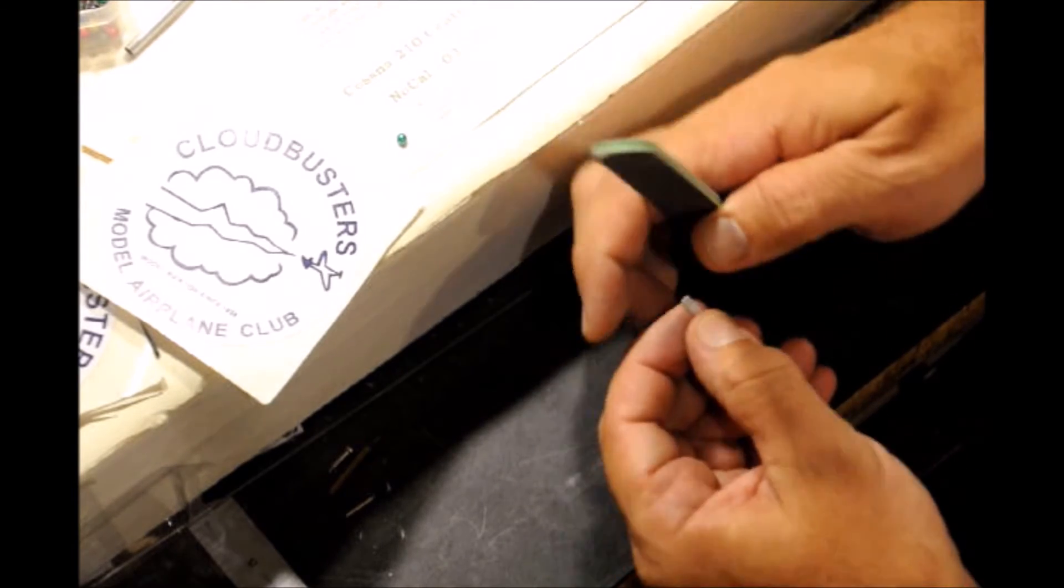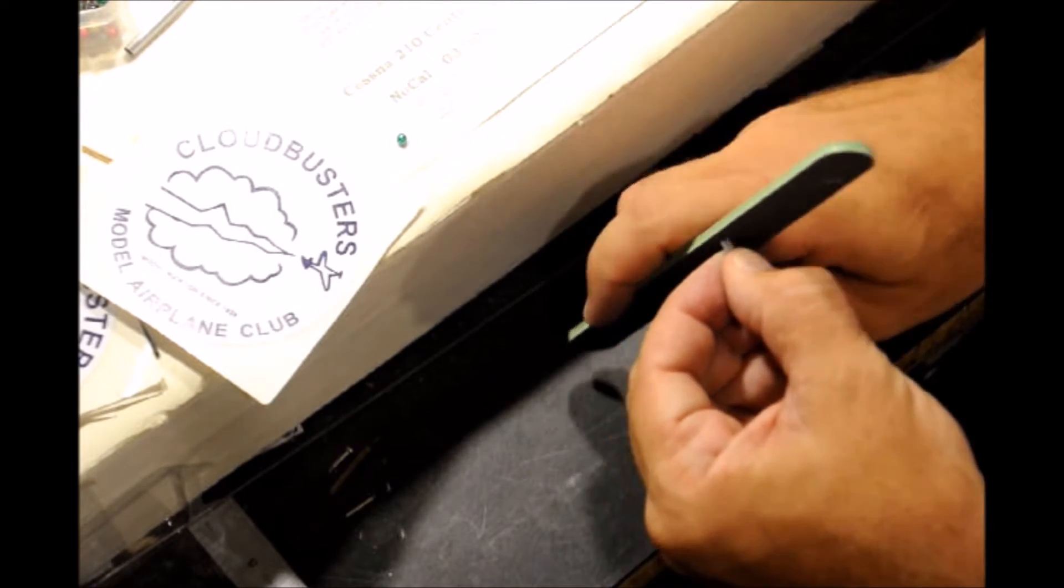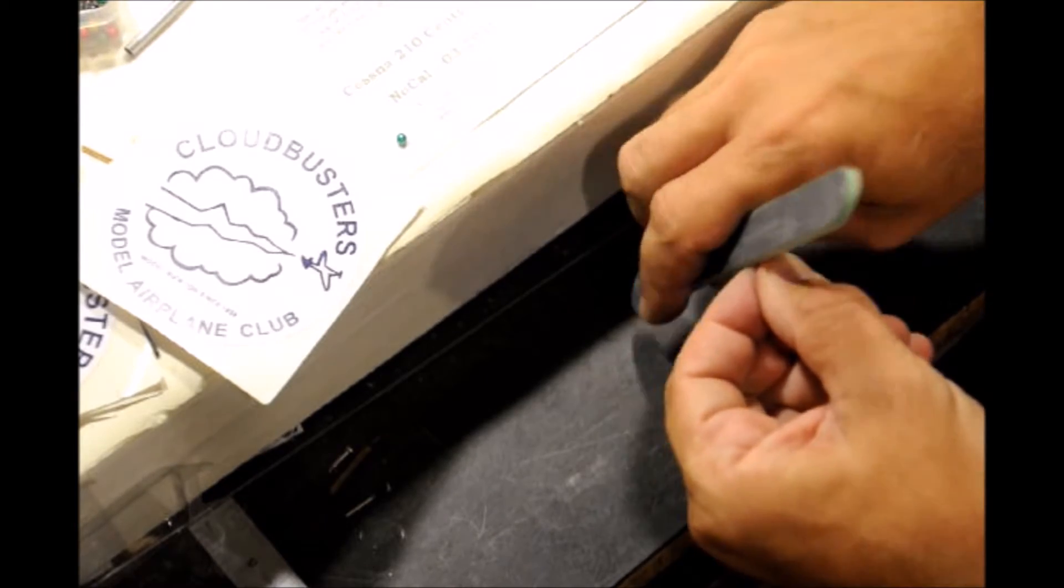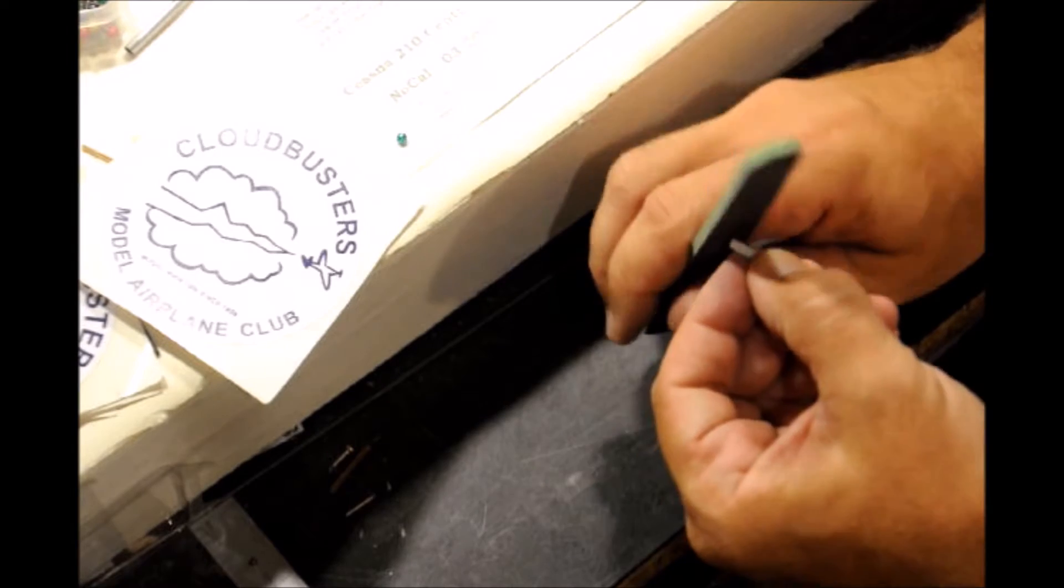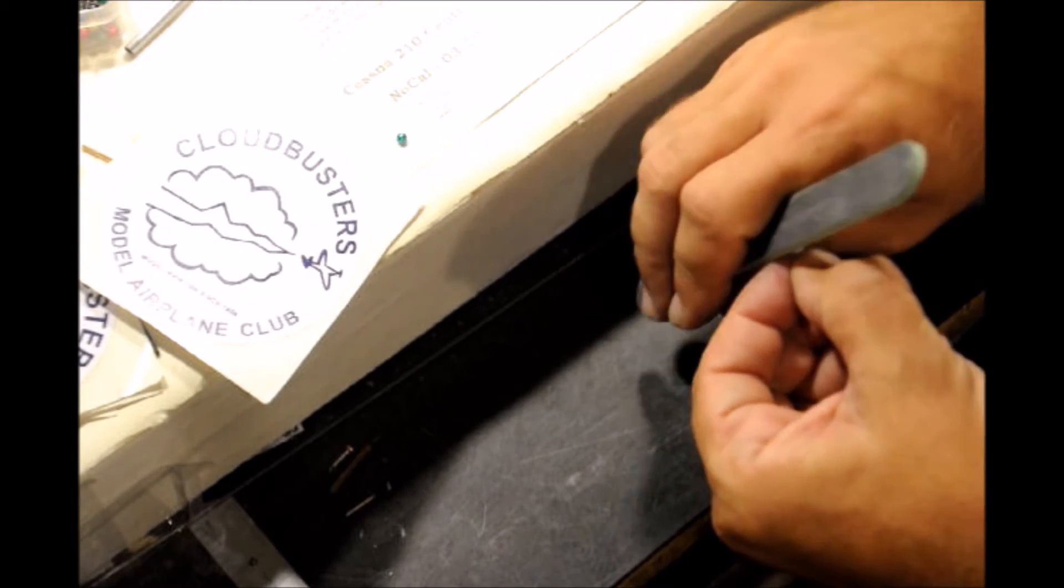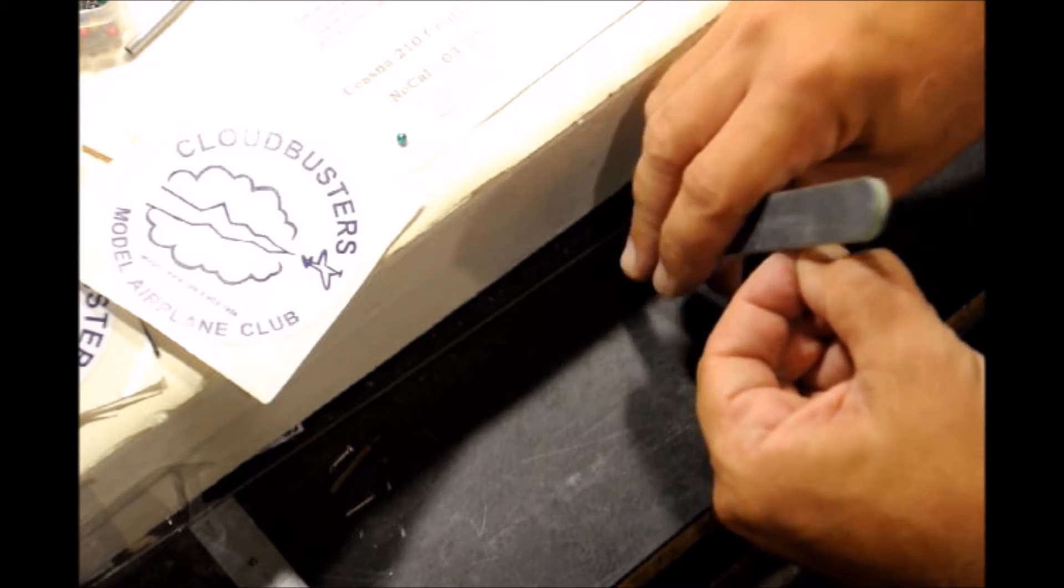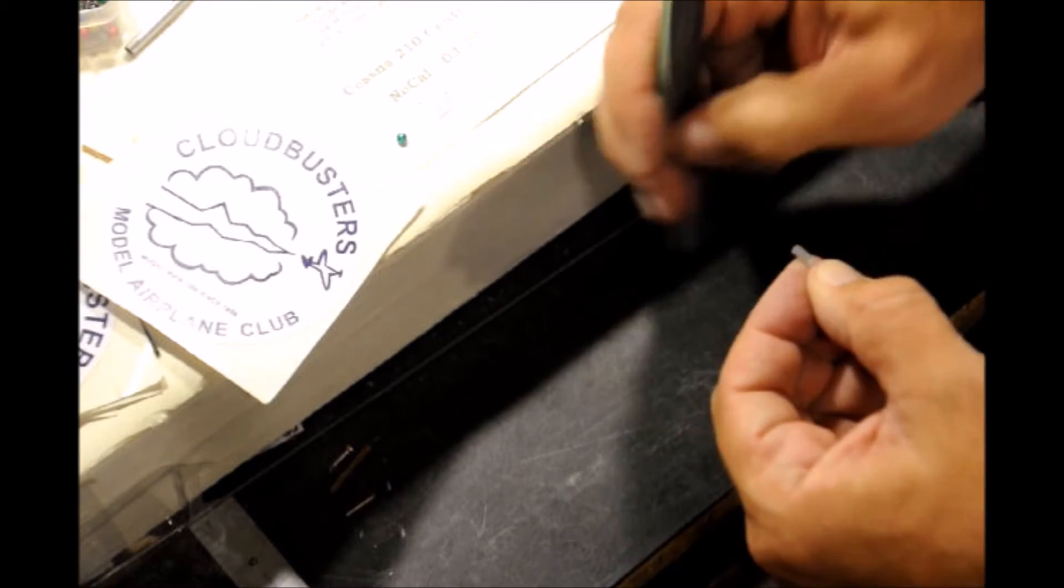Step 2 is drilling. But first I'm going to sand the corners so that these are nice and round. Just give it a couple swipes with the emery board and that knocks off those corners.